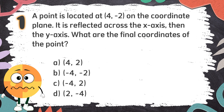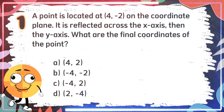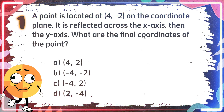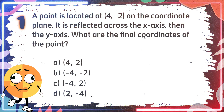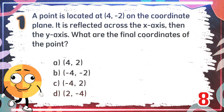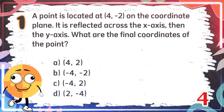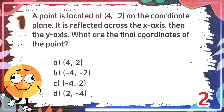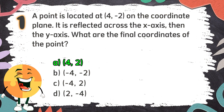Average Round. [Question 1 answer choices:] B. (-4, -2), C. (-4, 2), D. (2, -4). The correct answer is A, (4, 2).